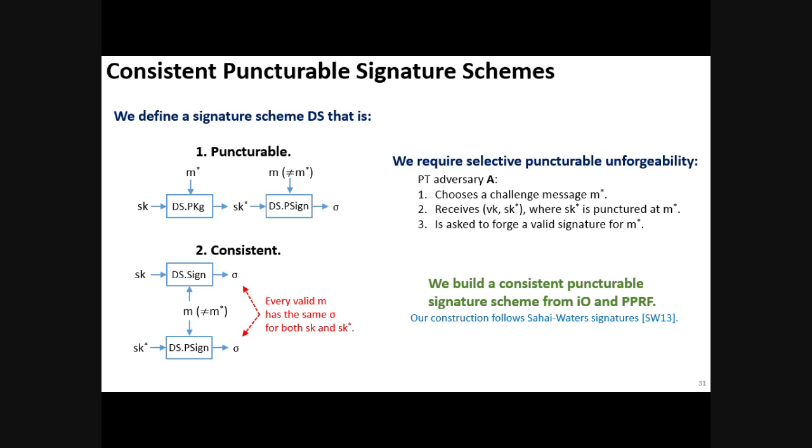Now, security requires selective punctured unforgeability. That means that we consider the following game. A polynomial time adversary A chooses a challenge message M-star, and it receives back a verification key and a secret key that is punctured at M-star. It is then asked to forge a valid signature for M-star. This entire construction essentially mimics the idea of PPRFs, and we get it by obfuscating PPRFs. And in fact, the construction is the same as the Sahai-Waters signatures.